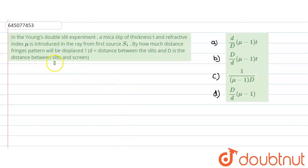In this question, what is given is that in Young's double slit experiment, a mica sheet of thickness t and refractive index μ is introduced in the ray from the first source. Now by how much distance will the fringe pattern be displaced?